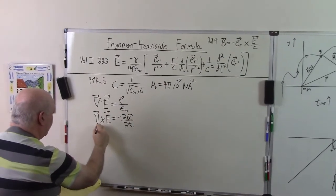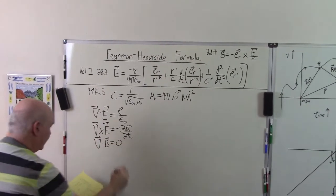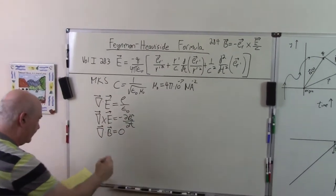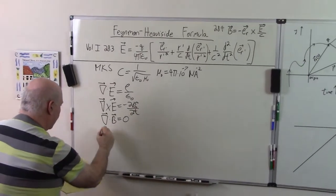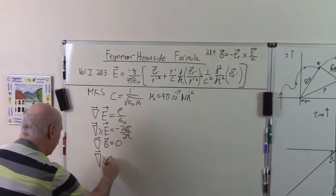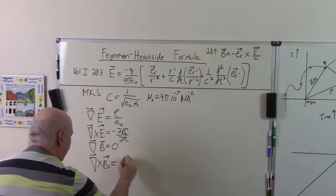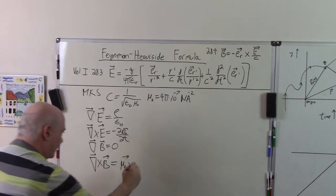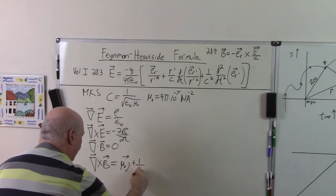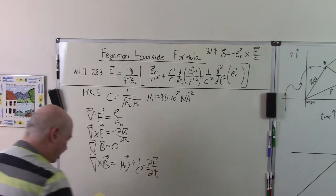The divergence of B equals 0, Gauss's law for magnetism. And then Ampere's law: the curl of B is equal to mu_0 times the current density plus 1 over C squared, the partial of the electric field with respect to time.